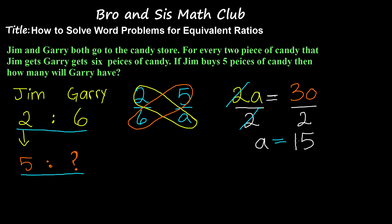So a is equal to 15. So now the amount that we didn't know, which we represented as the variable a, is the number 15. So if Jim buys five pieces of candy, then Gary will have 15 pieces of candy. Our ratio has now become 5 to 15.